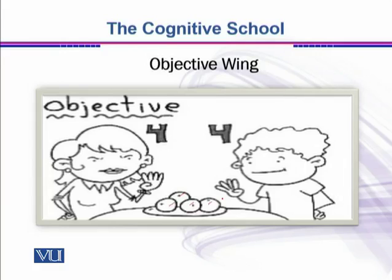Objective reality means that it is measurable, evident, it can be analyzed, well thought out, counted, and observable. So this is the objective wing about reality.